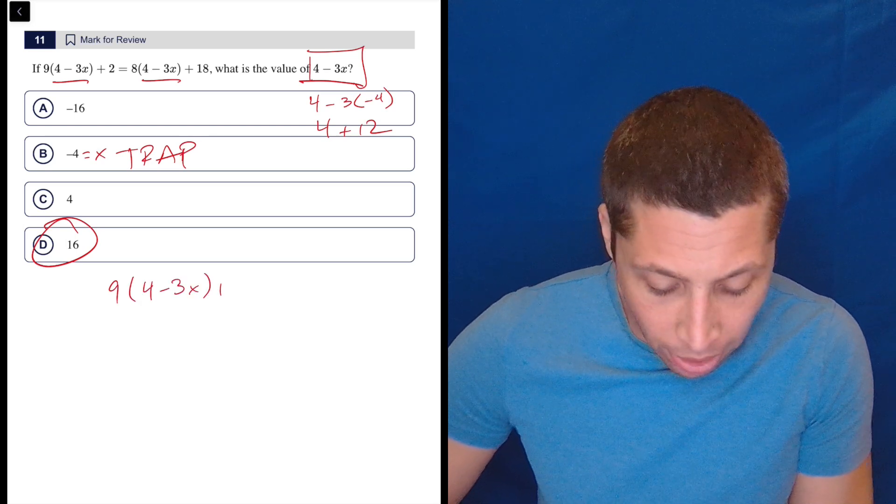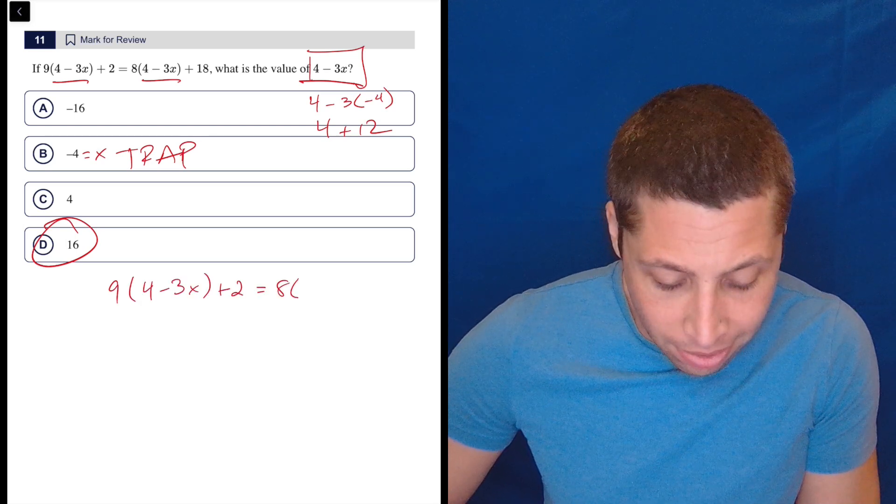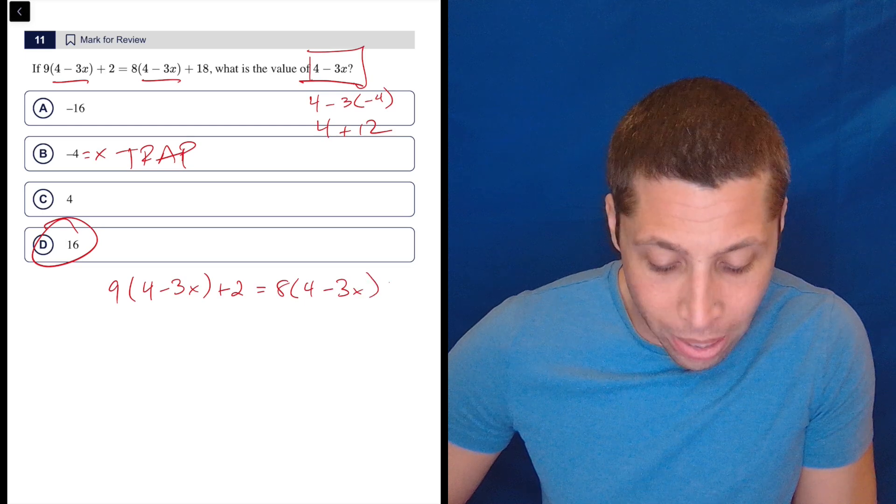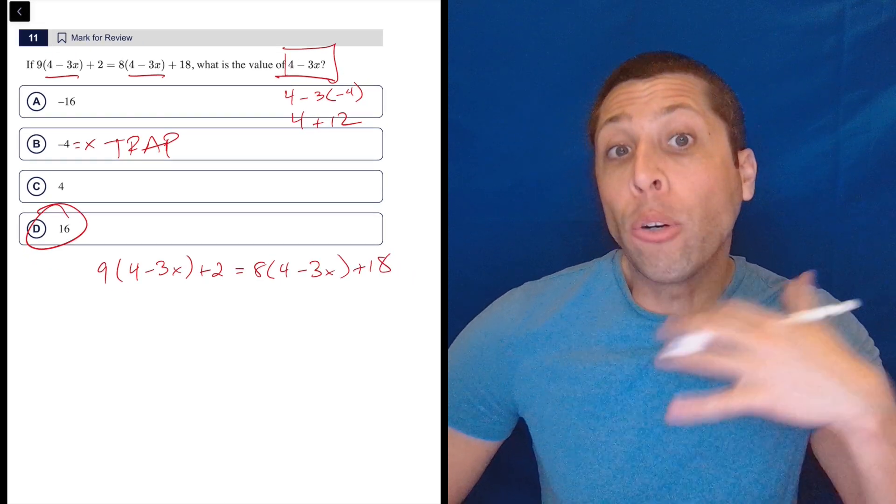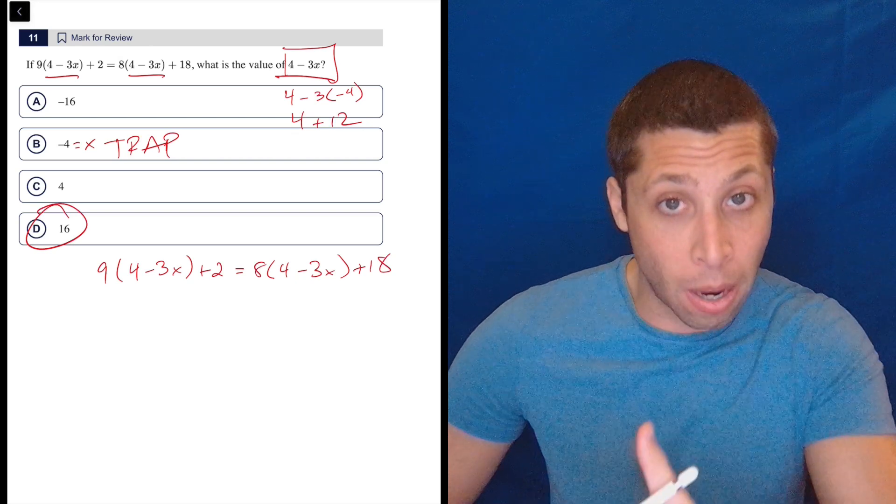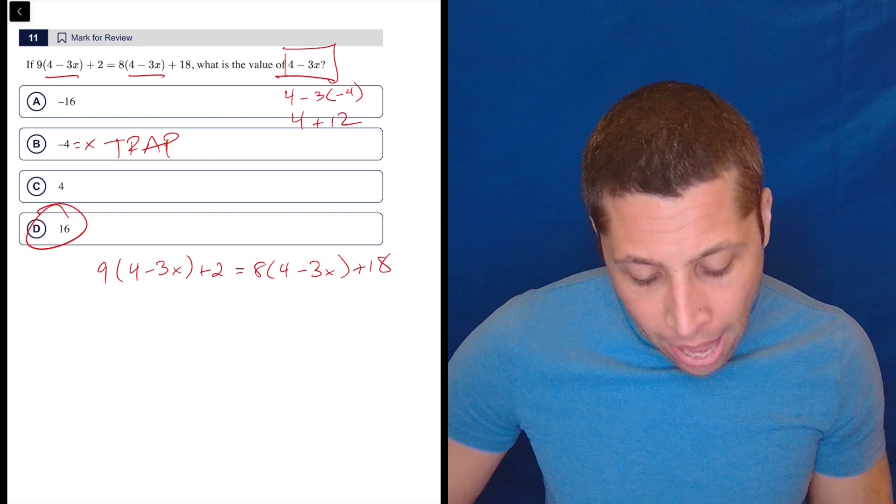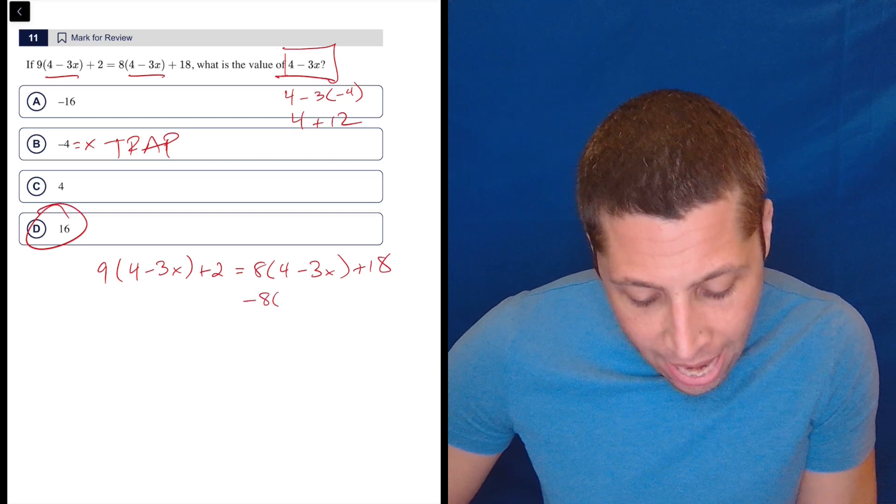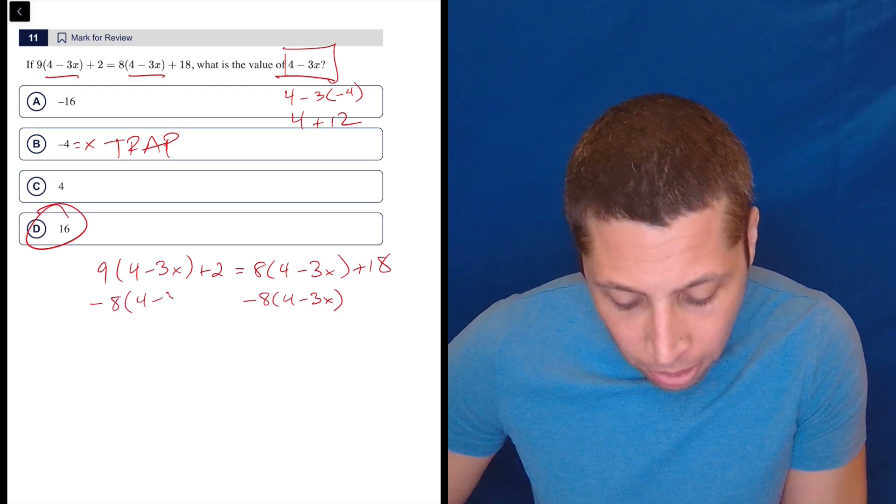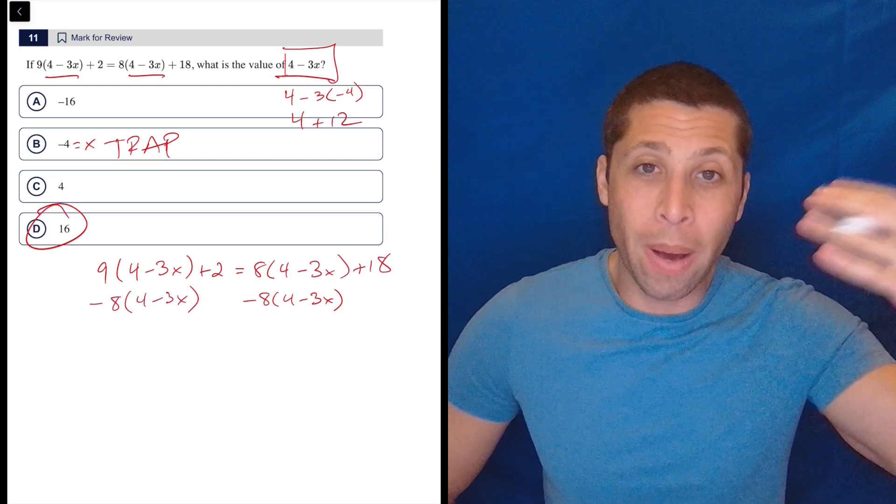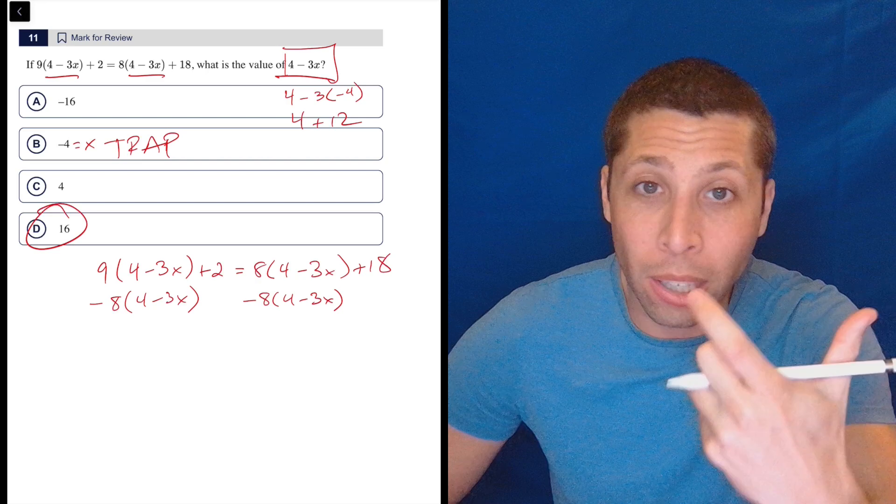And it's useful for not necessarily this question, but the SAT sometimes involves situations where we are not really solving for a variable itself, but for a group of variables, a group of letters and numbers. So we should get in that habit and see if I subtract eight times four minus three X from both sides as a group, I can do that because four minus three X is kind of like its own little term.